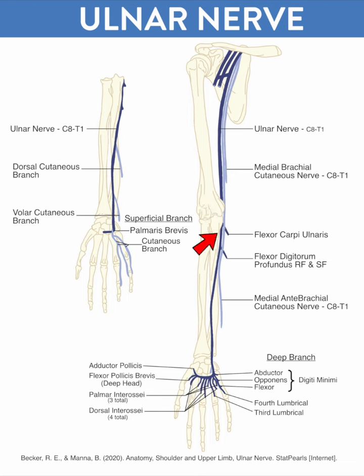It innervates the flexor carpi ulnaris and the FDP — flexor digitorum profundus — of the ring finger and small finger. That's up high. It then provides the dorsal and palmar cutaneous branches that come off the proximal and distal forearm, respectively, and those pass down to provide innervation that we'll talk about in a little bit.